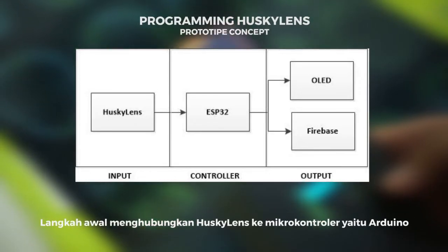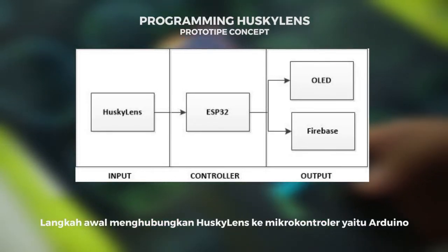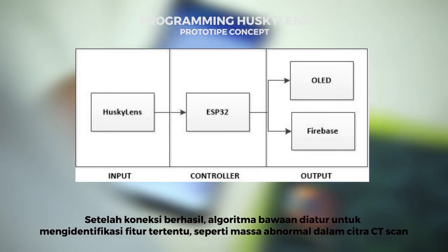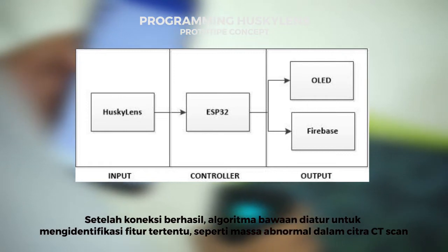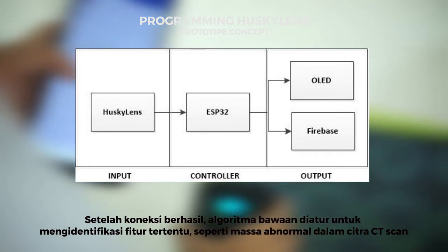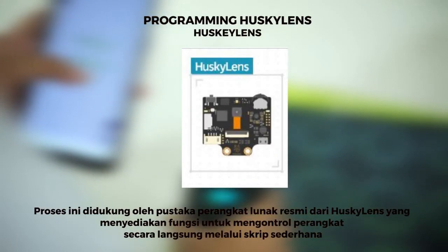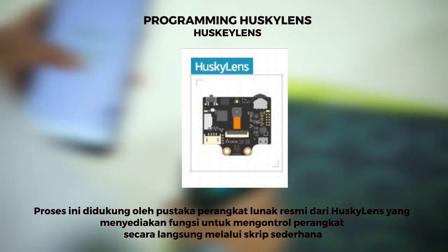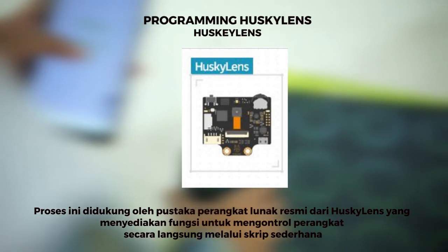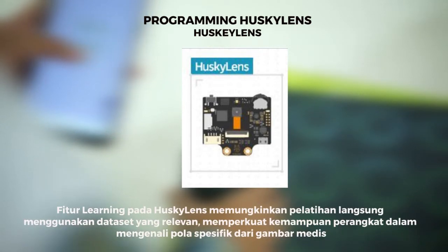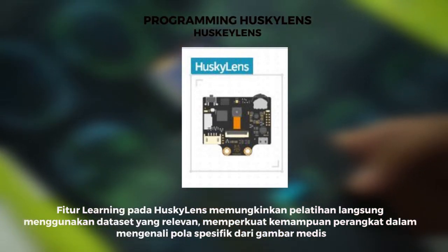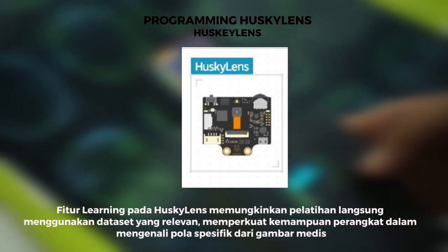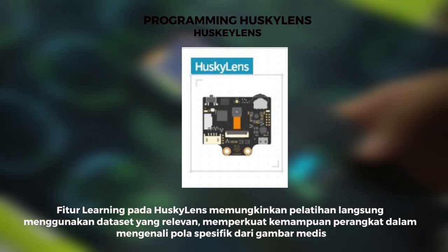The system connects HuskyLens to a microcontroller, namely Arduino. After a successful connection, the classification algorithms are set to identify specific features such as abnormal masses in CT scan images. This process is supported by the official software library from HuskyLens that provides functions to control the device directly through simple scripts. The learning feature on HuskyLens enables live training using relevant datasets, strengthening the device's ability to recognize specific patterns from medical images.